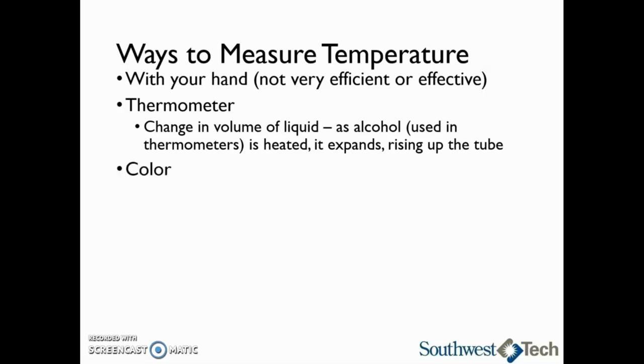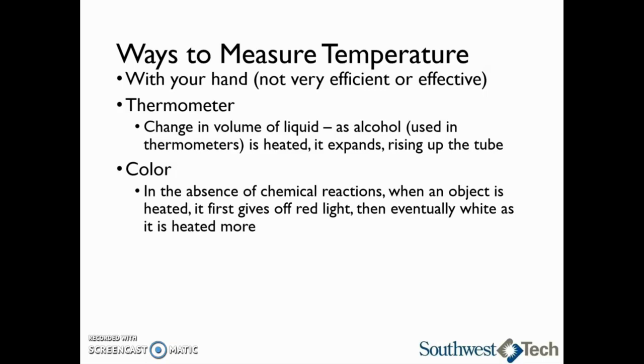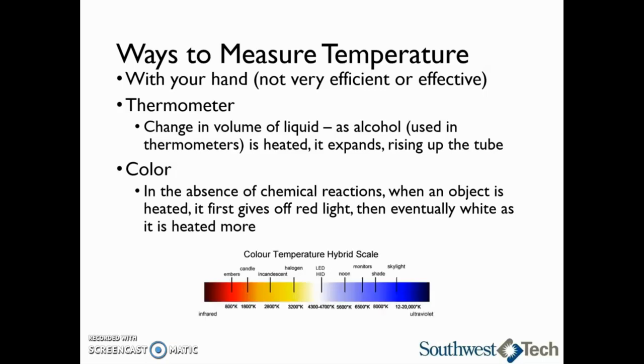Another way to measure temperature is by looking at its color. This is used when we are looking at very high temperatures. In the absence of chemical reactions, when an object is heated, it first gives off red light, and then eventually white light as it is heated more and more.